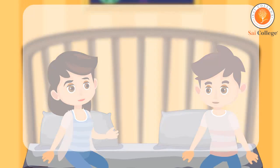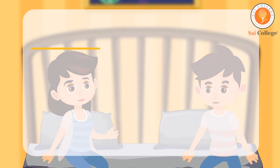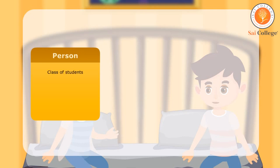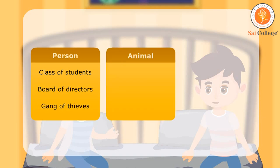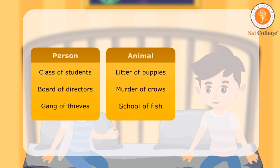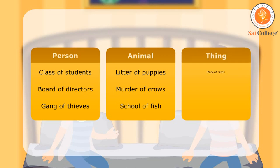Here is a list of some collective nouns. Person: class of students, board of directors, gang of thieves. Animal: litter of puppies, murder of crows, school of fish. Thing: pack of cards, pair of shoes, range of mountains.